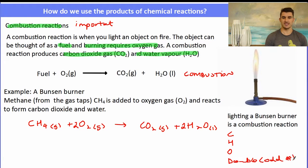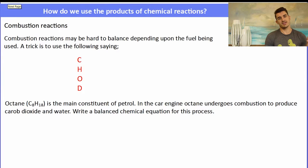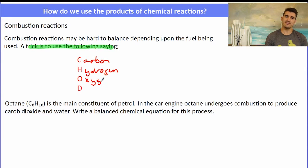D is an interesting little saying and that stands for double which we'll go over now. So some of the combustion reactions may be hard to balance depending upon the fuel being used. A little trick is to use the saying CHOD. CHOD stands for balancing for carbon first, balancing for hydrogen second, balancing for oxygen third. And then we apply D for double if we have an odd number of oxygens. Because on the left hand side the reactant side we can only add even numbers of oxygens. So if we have an odd number of oxygens then we need to do something to fix that up. And we double everything.